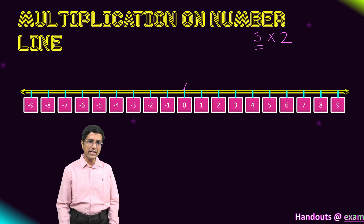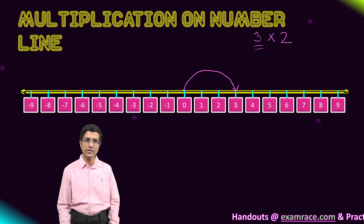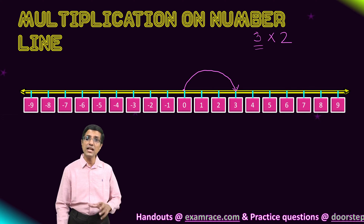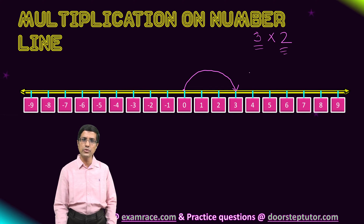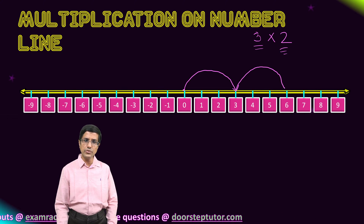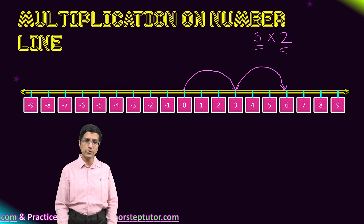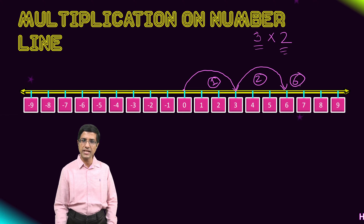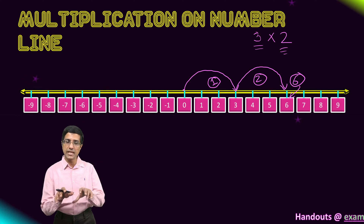So we will start with 0, we will take a jump of 3 — we have added 3 to 0 and reached 3. Then we will again add 3. This is what the 2 does: it tells us to take 2 jumps starting from 0. So we took the first jump and then the second jump, and our answer becomes 6. That's our final answer — that is where we end up.